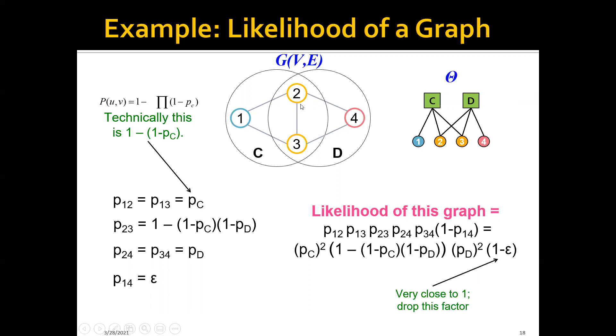And for the edge between node 2 and node 3, it's a little bit more complicated because both node 2 and node 3 belong to two communities. They belong to both community C and community D.